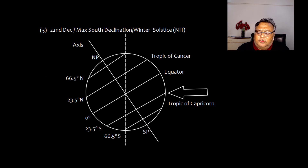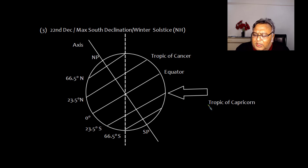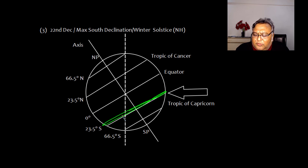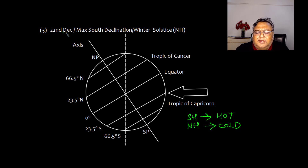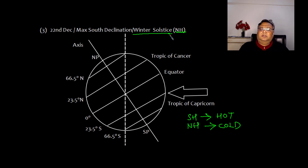With the same logic: when the sun's rays are directed on the Tropic of Capricorn — 23.5° south latitude — the south end is more exposed to the sun. The southern hemisphere will be hot and the northern hemisphere will receive lesser energy and be relatively cold. This is 22nd December — maximum south declination — and for the northern hemisphere this is winter solstice.